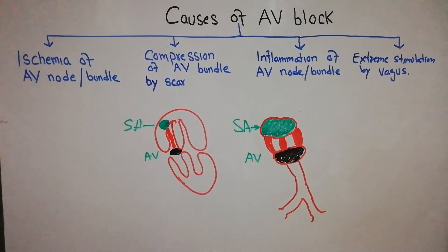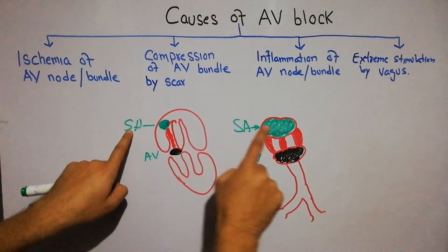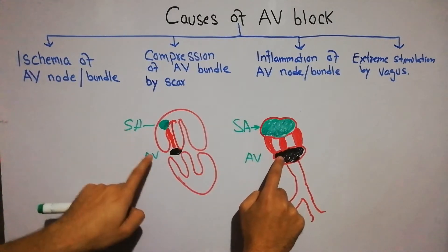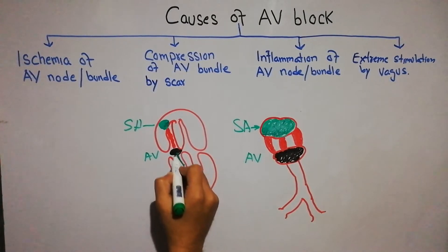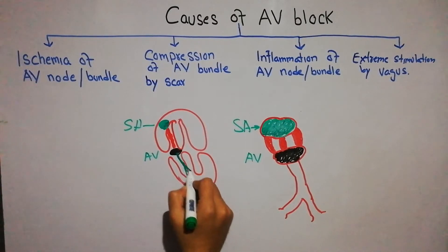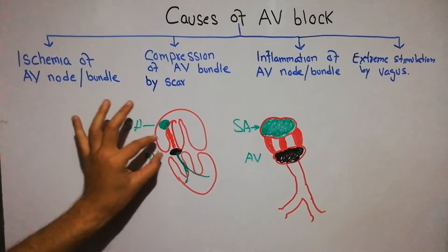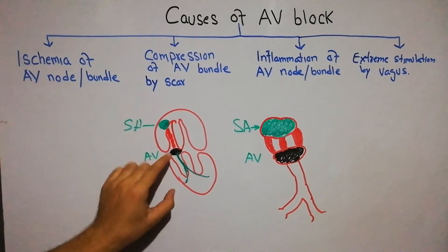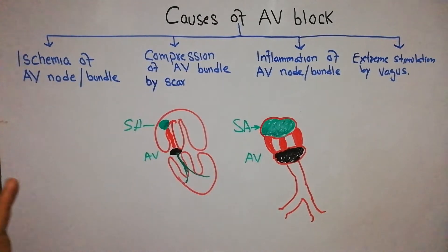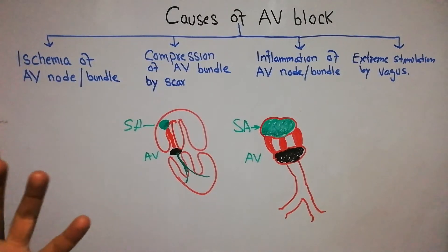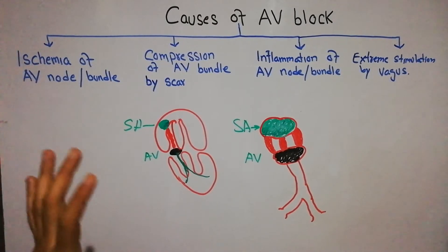The electrical activity of the heart starts in the SA node, the sinoatrial node. From the SA node it goes through the internodal fibers into the AV node, and from the AV node it goes through the bundle of His, or the AV bundle, through the Purkinje fibers into the ventricle. In the ventricle it causes depolarization, and the depolarization causes contraction of the heart.